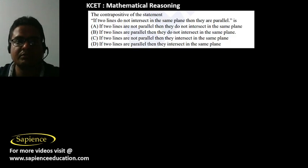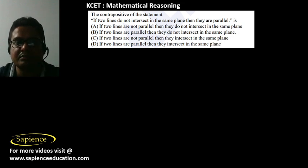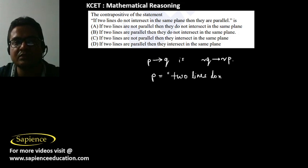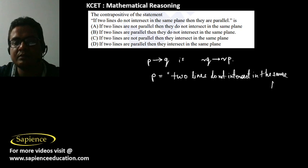Next, find the contrapositive of the statement: 'if two lines do not intersect in the same plane, then they are parallel.' The contrapositive of P then Q is if not Q then not P. Here P is 'two lines do not intersect in the same plane' and Q is 'they are parallel'.